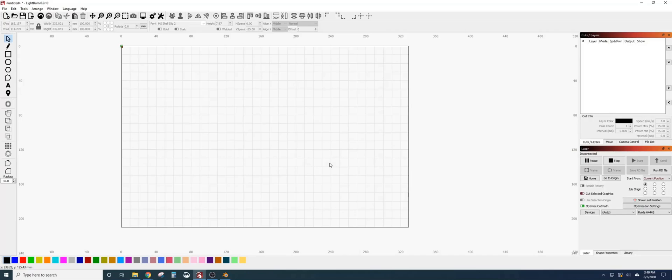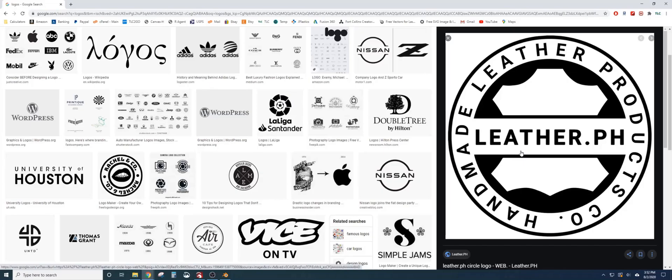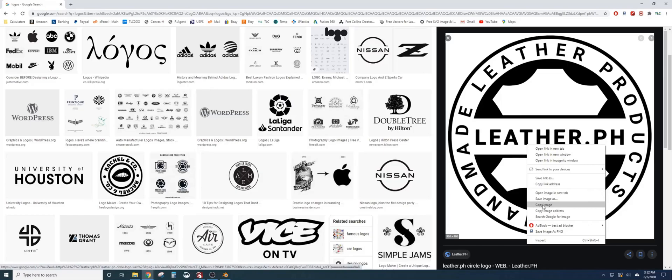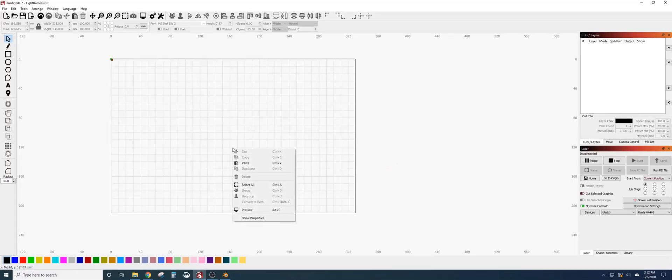The first thing we're going to need to do is find something to engrave. If you have an SVG or DXF file, it's very easy to get started engraving. But often times you're given a JPEG or PNG file from friends or clients that will need to be converted to a vector line so that it will have a cleaner engraving. For my example, I'm going to open up Google and find a generic logo for our example. To get this back into Lightburn, I don't have to save the image. I can simply right click and copy the image. Then I can go back into Lightburn, right click, and paste it in.